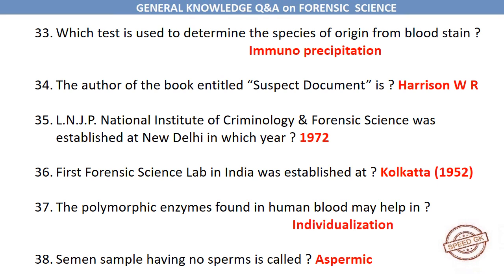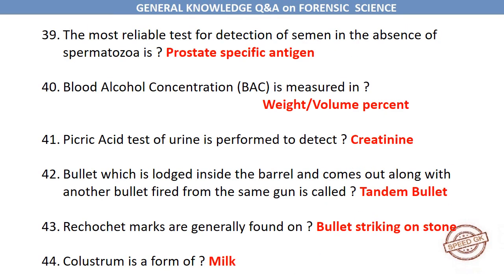The first forensic science lab in India was established at Kolkata in 1952. The polymorphic enzymes found in human blood may help in individualization. A semen sample having no sperms is called aspermic. The most reliable test for detection of semen in the absence of spermatozoa is prostate-specific antigen (PSA).